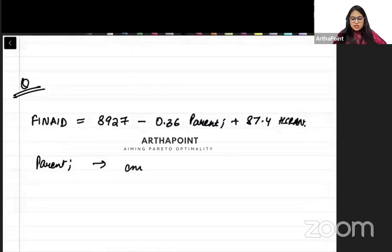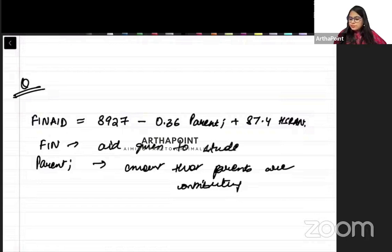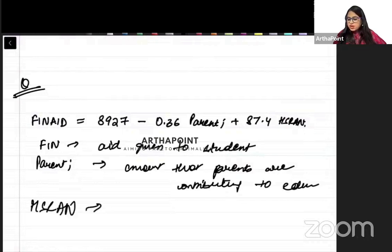This model is given to you, where it is saying that parent represents the amount that parents are contributing. Financial aid represents the aid given to student for education, and HS rank represents the rank of student.